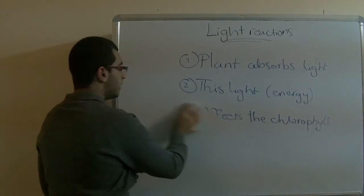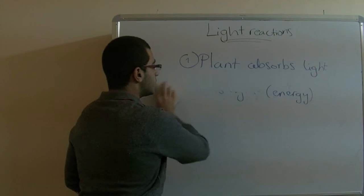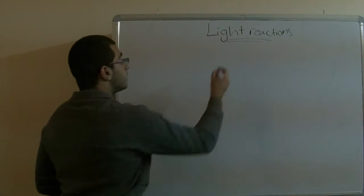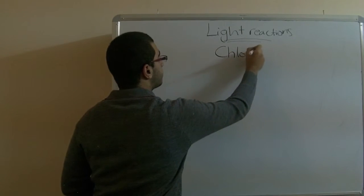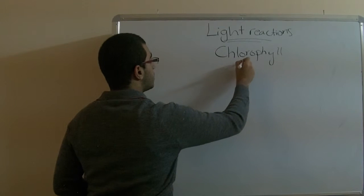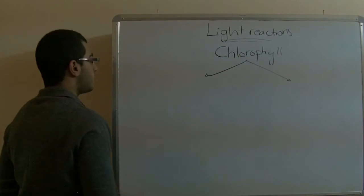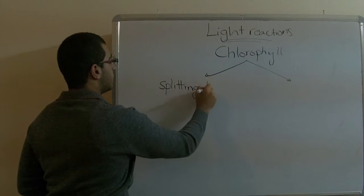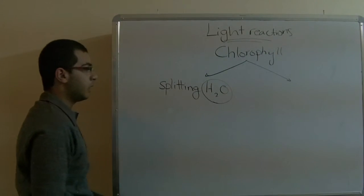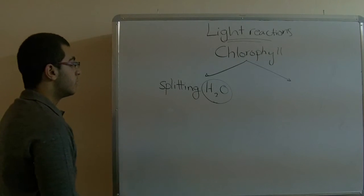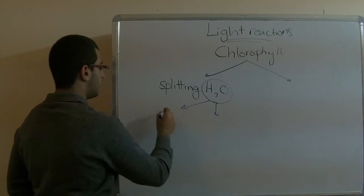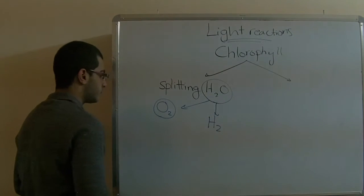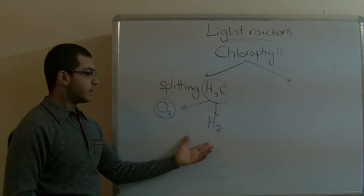After the chlorophyll absorbs the light energy, it uses the energy in two ways. The first thing is splitting the H2O, the water molecule, to give O2 and H2.